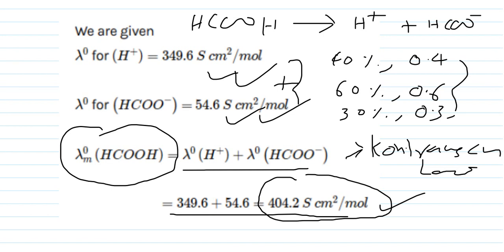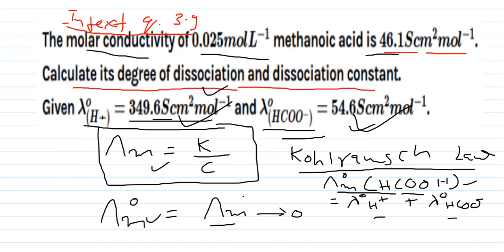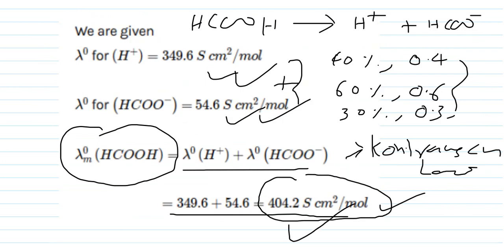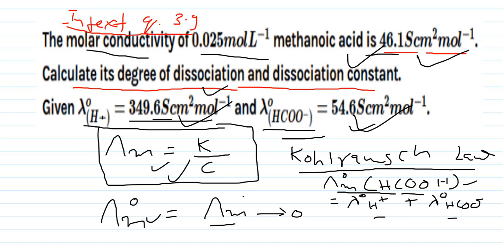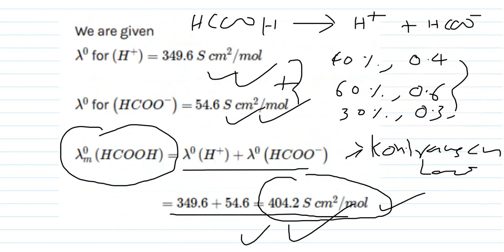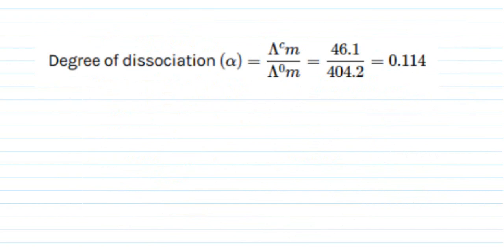We calculate the degree of dissociation of methanoic acid using the formula: α = λm / λ°m, where λm is the molar conductivity (given as 46.1 S·cm²/mol) and λ°m is the limiting molar conductivity (calculated as 404.2 S·cm²/mol using Kohlrausch's law). This gives α = 46.1 / 404.2 = 0.114, meaning 11.4% dissociation.